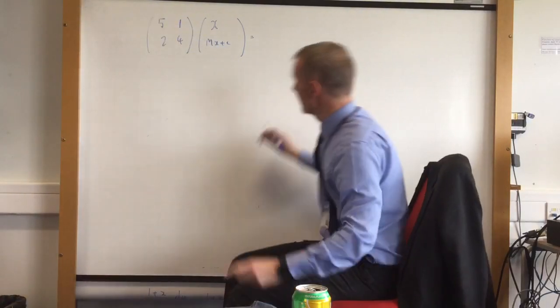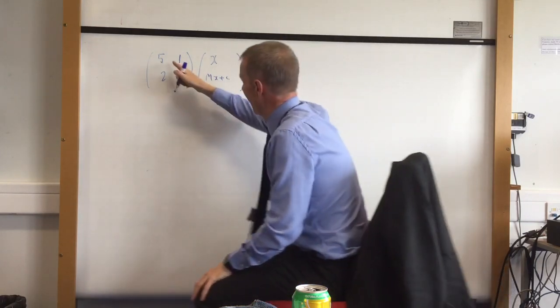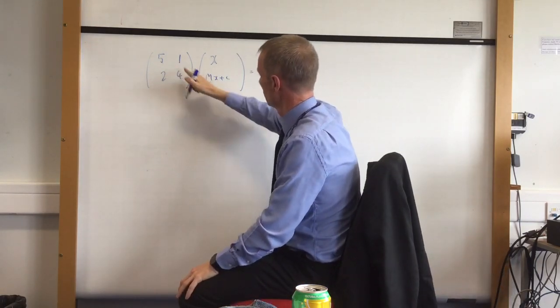Right, so let's do the invariant lines of this matrix: 5, 2, 1, 4.